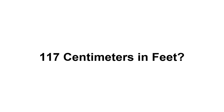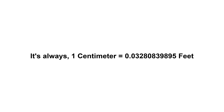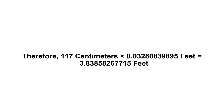117 centimeters in feet. First of all, we need to know the value of one centimeter in feet. One centimeter equals 0.03280839895 feet. Now we have to multiply 0.03280839895 by 117. Therefore, 117 centimeters times 0.03280839895 feet equals...